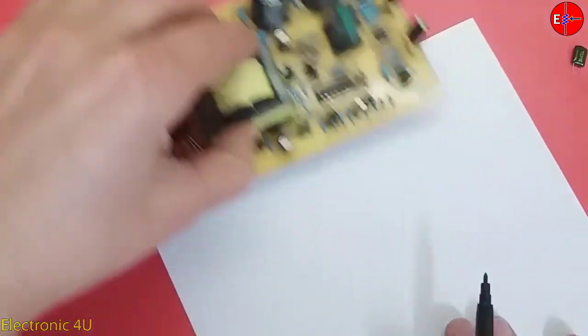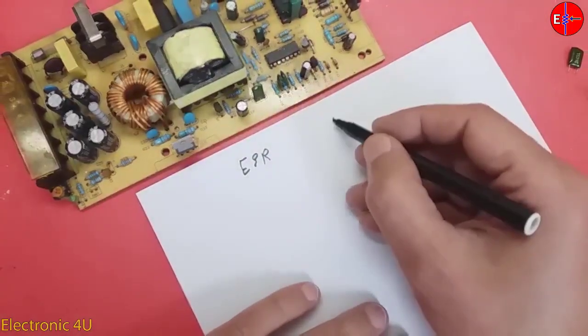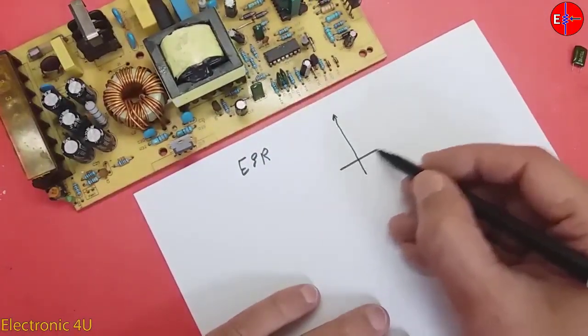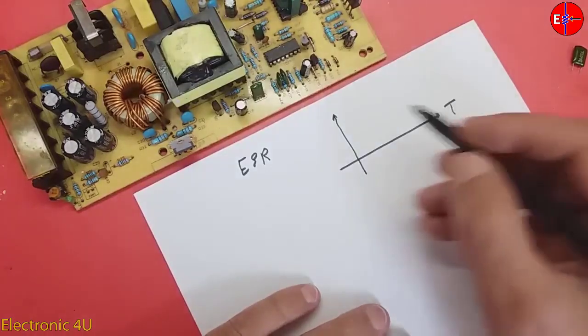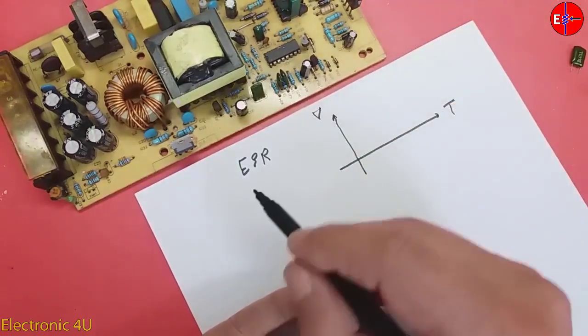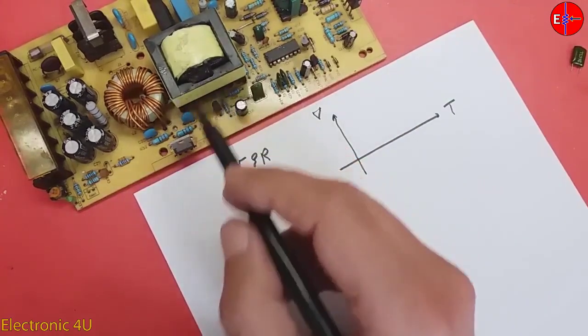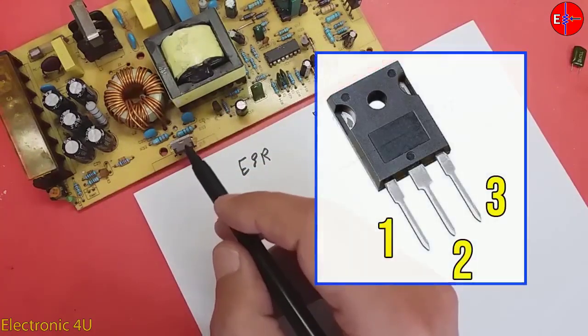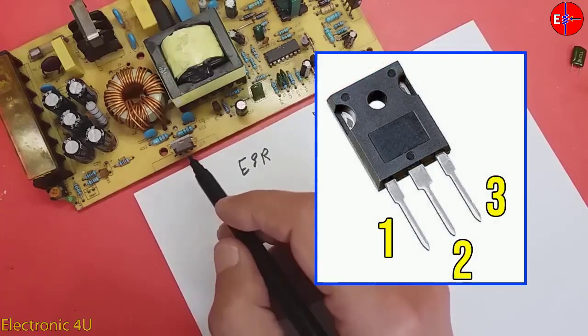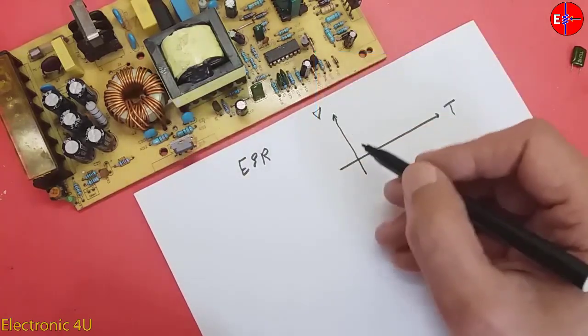Consider this example. Time axis, voltage axis. The voltage created in the transformer reaches the Schottky diode. This diode is fast type and has three pins. The voltage becomes DC in this way.